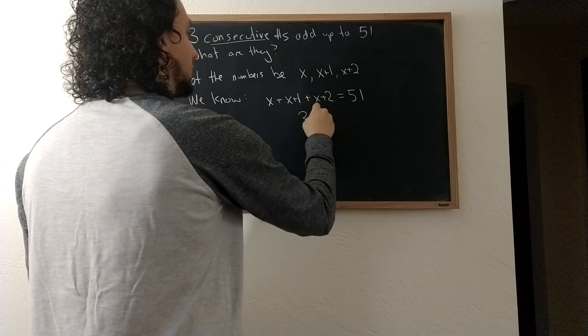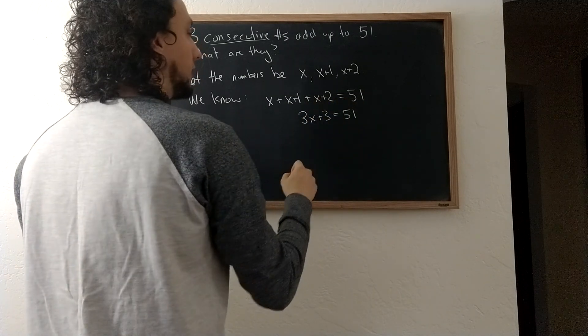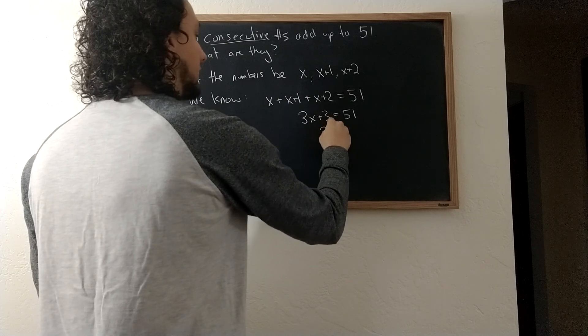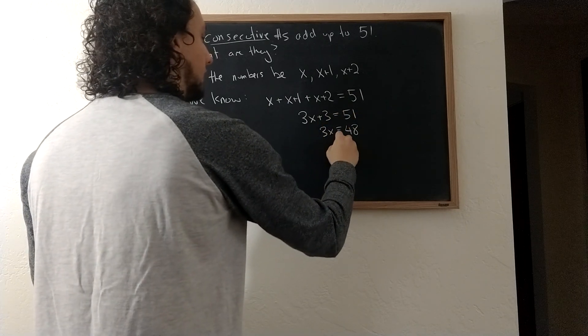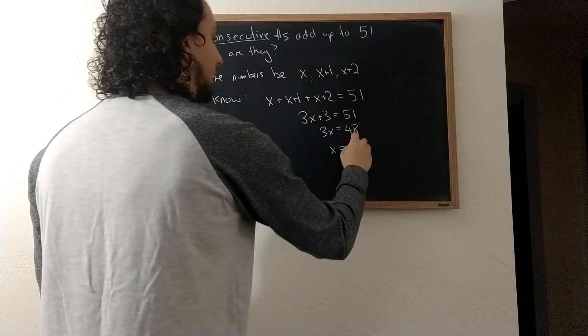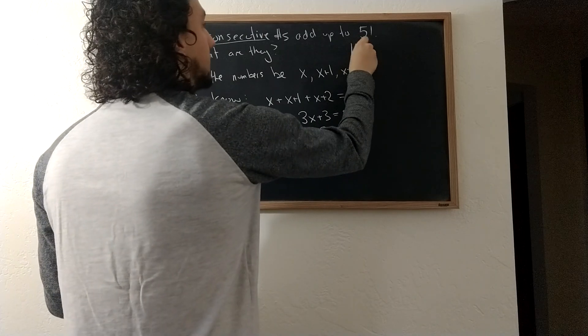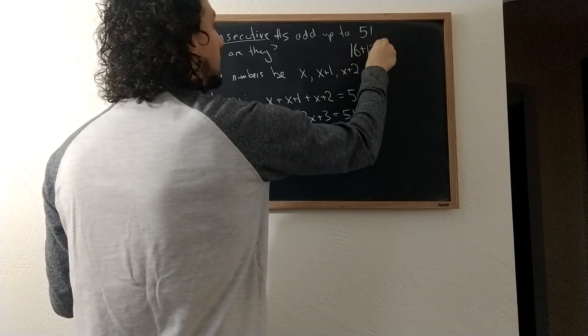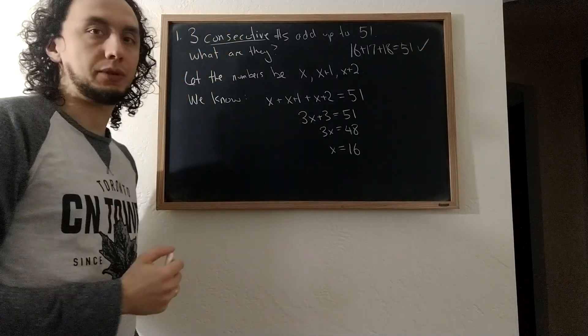So this simplifies to 3x plus 3 equals 51, which means 3x equals 48, and that gives x equals 48 divided by 3, which is 16. So the numbers are 16 plus 17 plus 18 equals 51, as you can check.